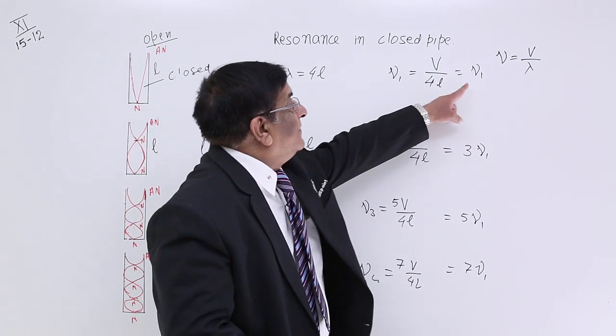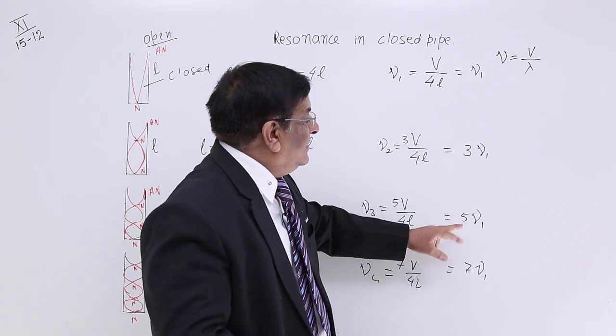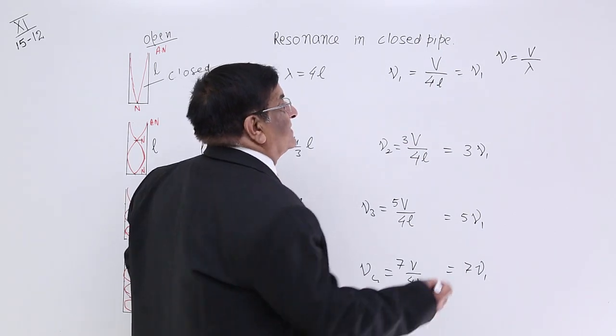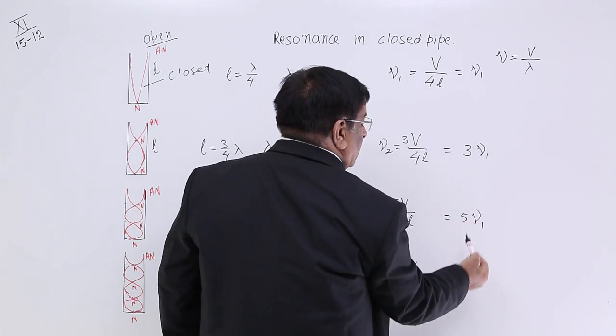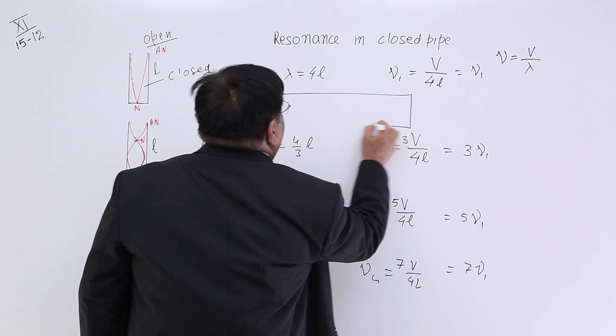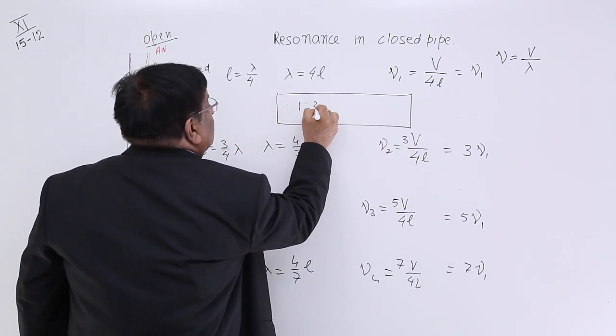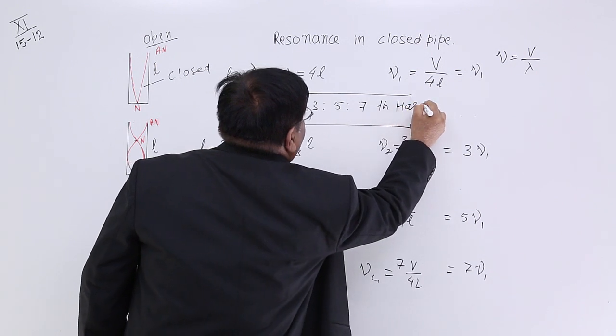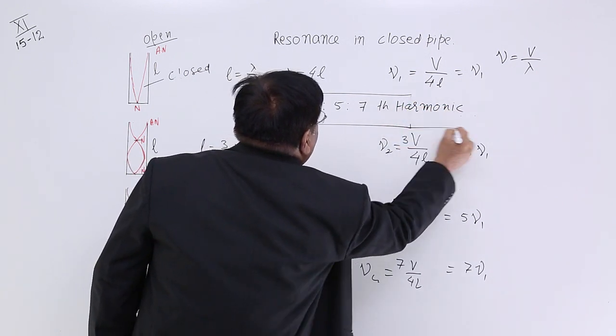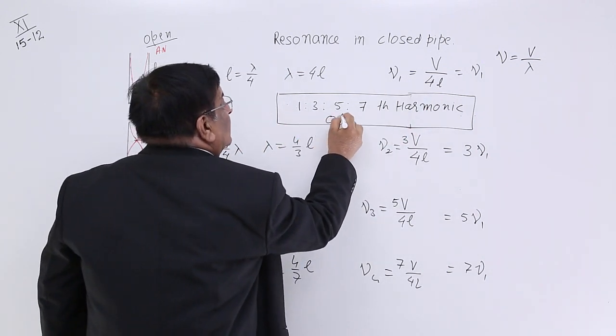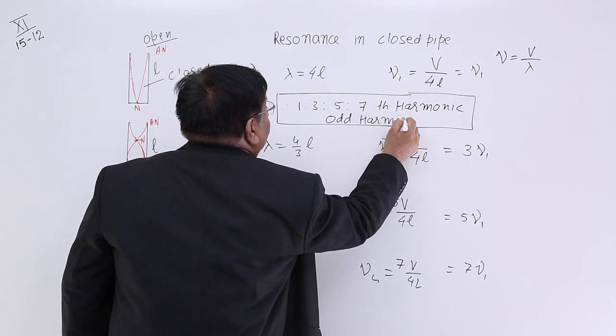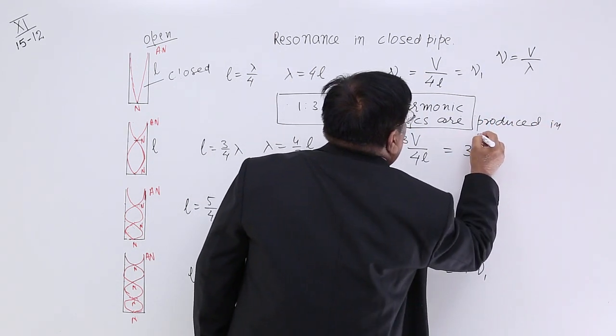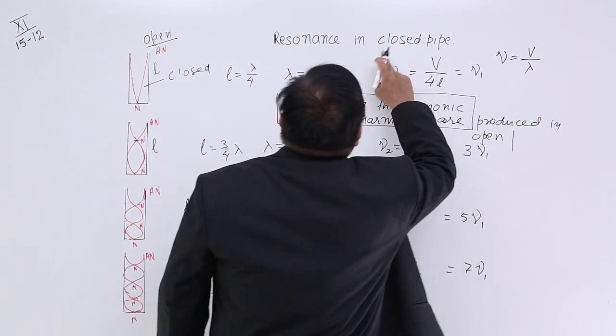Now you see the basic frequency we hear it. Then we hear 3. Then we hear 5 times. Then we hear 7 times. All these sounds are coming together. But what we miss? There is no 2ν₁. There is no 4. So the combination of frequencies what we are hearing is 1, 3, 5, 7 harmonic. And what is this number? Odd. So we say odd harmonics are produced in closed pipe.